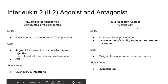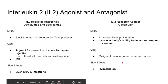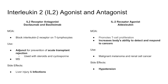Aldesleukin is the opposite — an IL-2 receptor agonist. This increases T cell proliferation by directly stimulating IL-2 receptors. It can be used in cancer, such as malignant melanoma and renal cell cancer, because it increases the body's ability to detect and respond to cancer by activating T cells. Interestingly, it can lead to hypotension — likely related to cytokine-mediated vasodilation or a sepsis-like response.